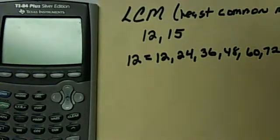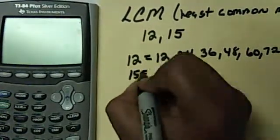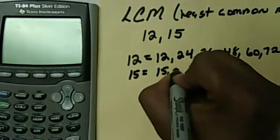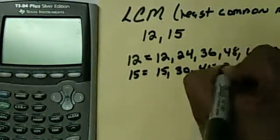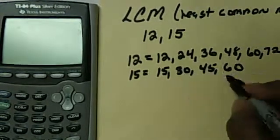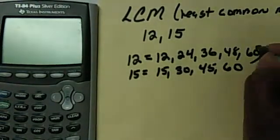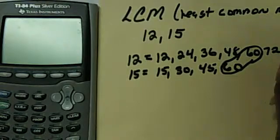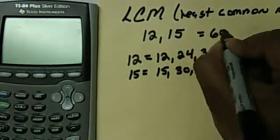Let me move this in a little bit. Then the next set, if I wanted to list the multiples of 15, I would list 15, 30, 45, 60. And then I could keep going and going. But I've run into the least common multiple that they've had in common, which is 60. So that's my LCM. So my LCM between 12 and 15 is 60.